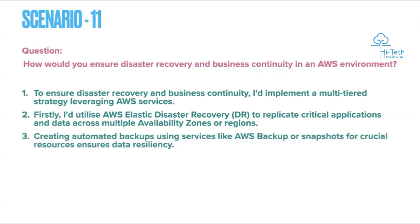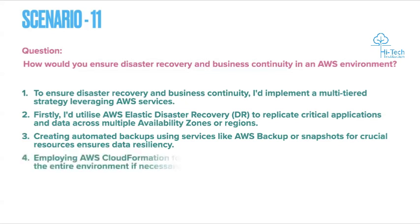Third, create automated backups using AWS services like AWS Backup or snapshots for crucial resources to ensure data resiliency. When any impact happens, if you have configured automated backup or snapshots on a particular cycle, even if data loss occurs, you can recover your data from the most recent backup.